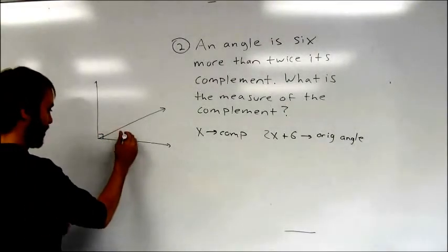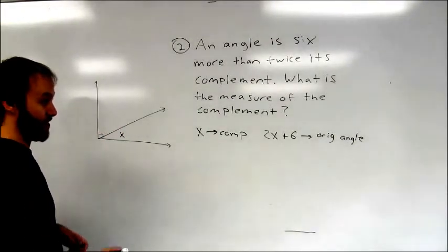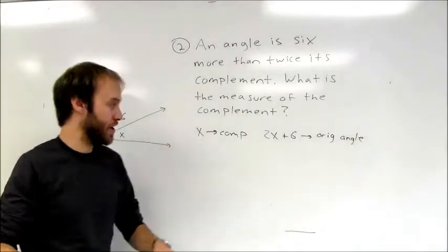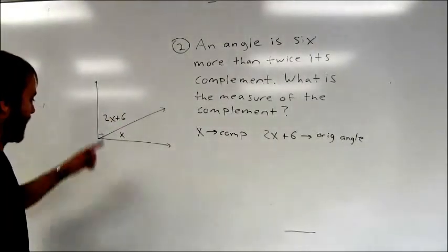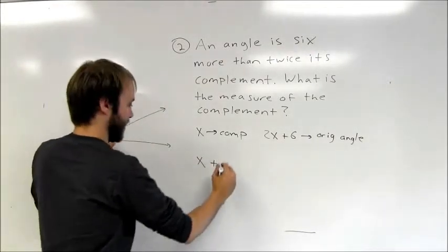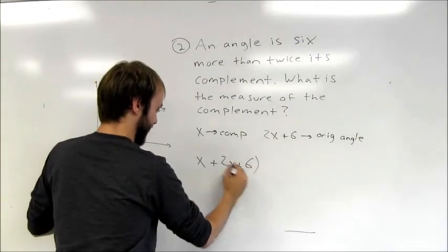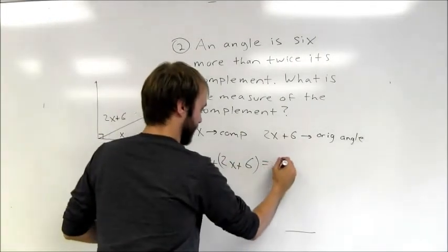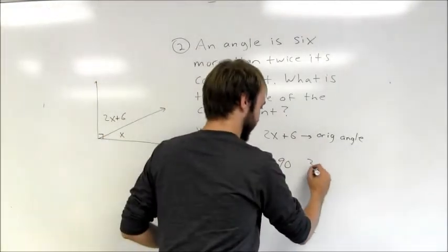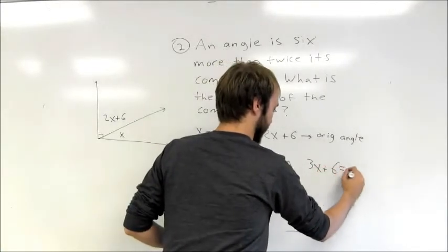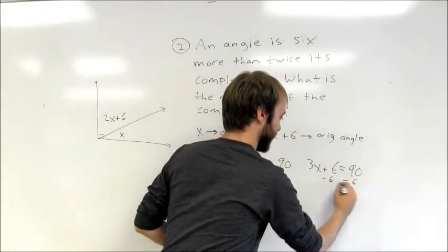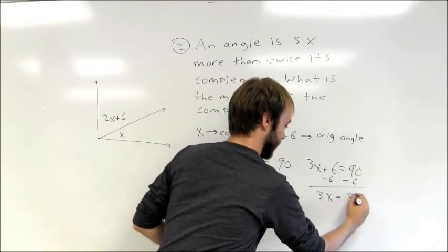The original angle is actually bigger than the complement. The two angles have a sum of 90 degrees, so I add x and 2x plus 6 together to get a sum of 90. Simplifying, I get 3x plus 6 equals 90. Subtracting 6 from both sides gives 3x equals 84.